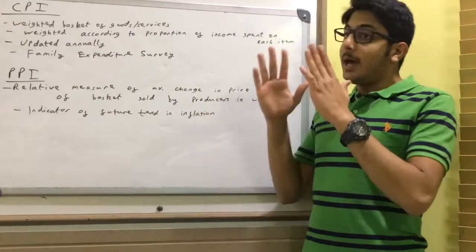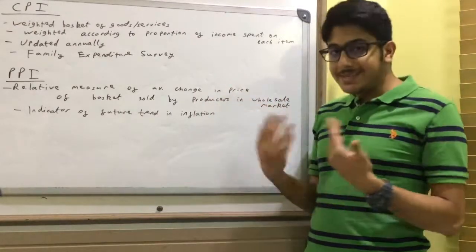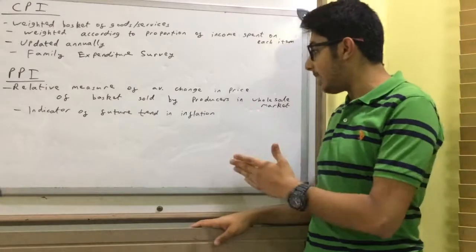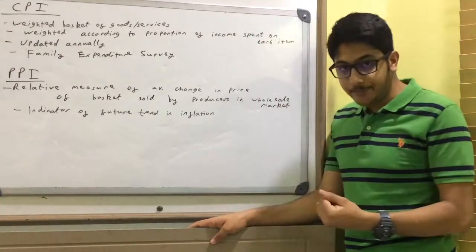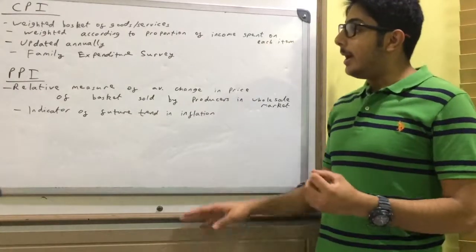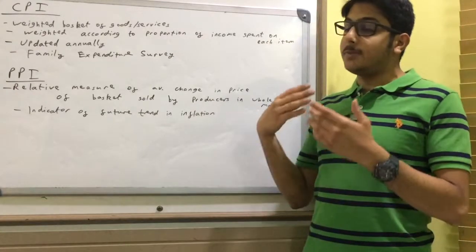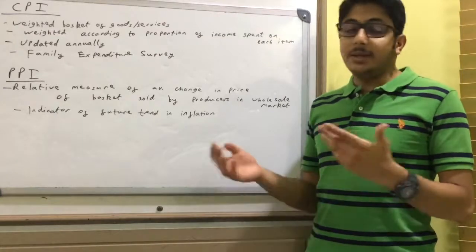The average price of the basket of goods and services sold by them. They also differ in terms of the composition of goods and services covered, the types of prices collected, and the extent of coverage of the services sector, for example.